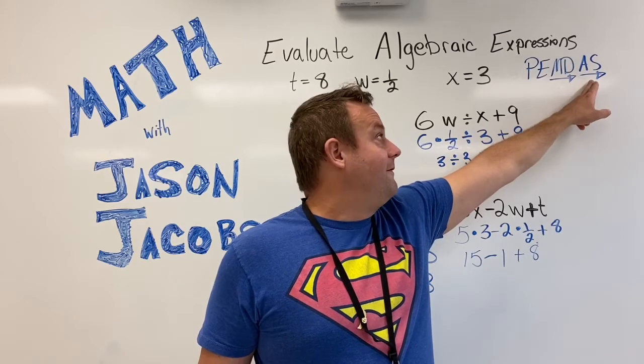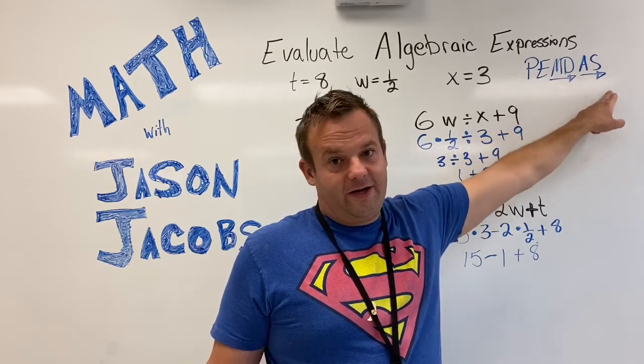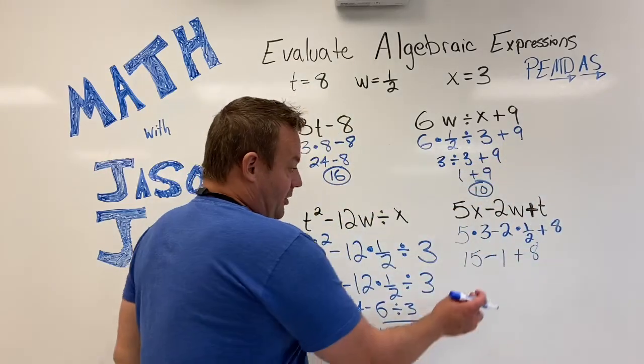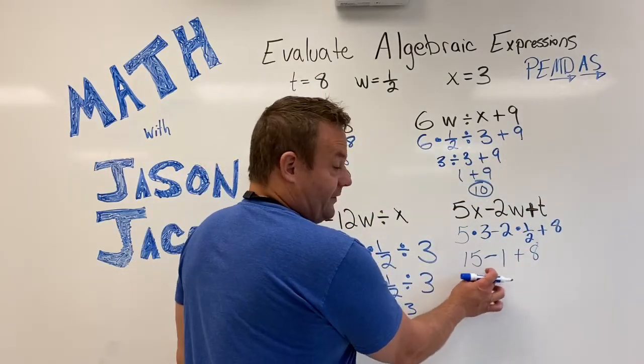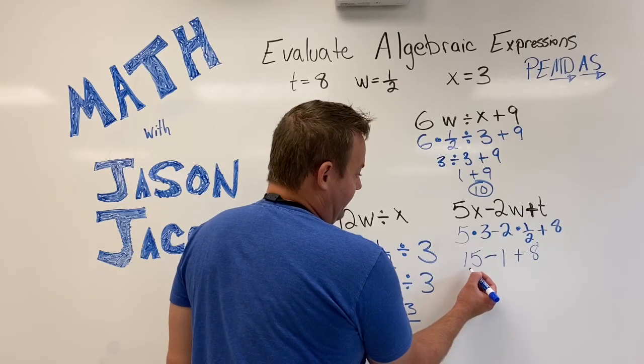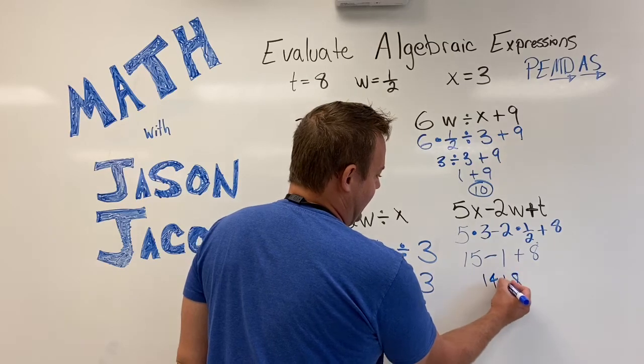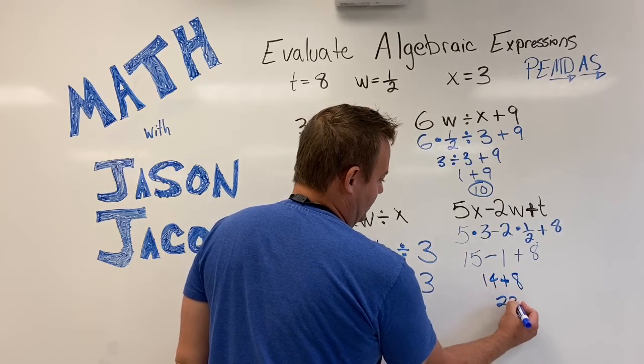But it's first come, first serve. That's why the arrow's there. So it really could say S-A instead of A-S. So subtraction comes first, first come, first serve. And 15 minus 1 is 14 plus 8. And 14 plus 8 is 22.